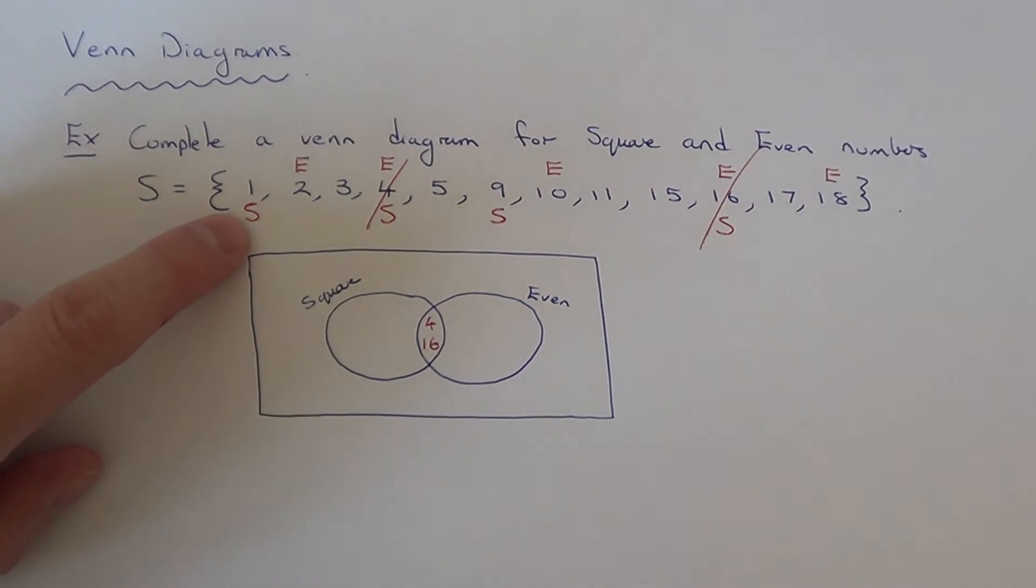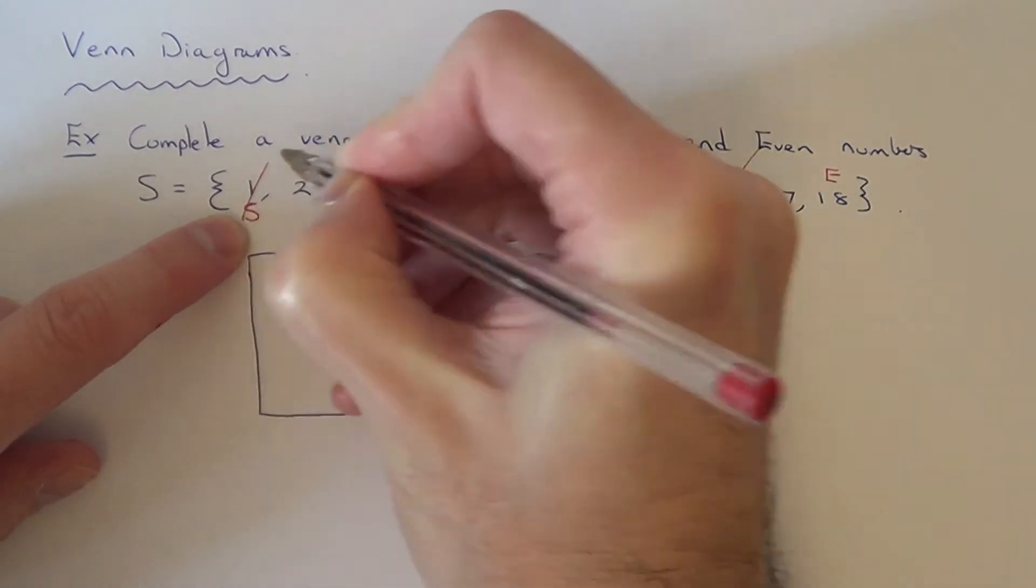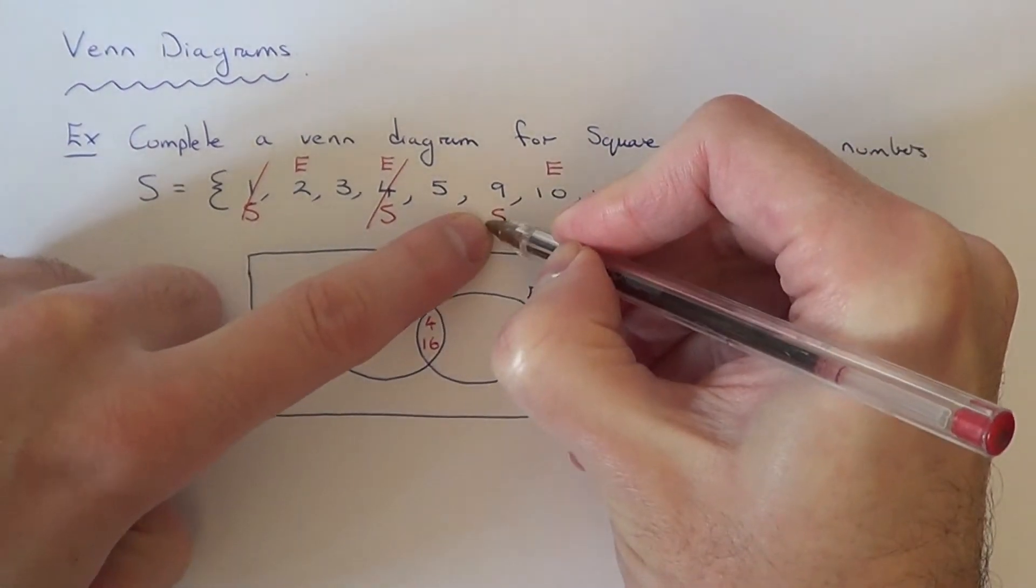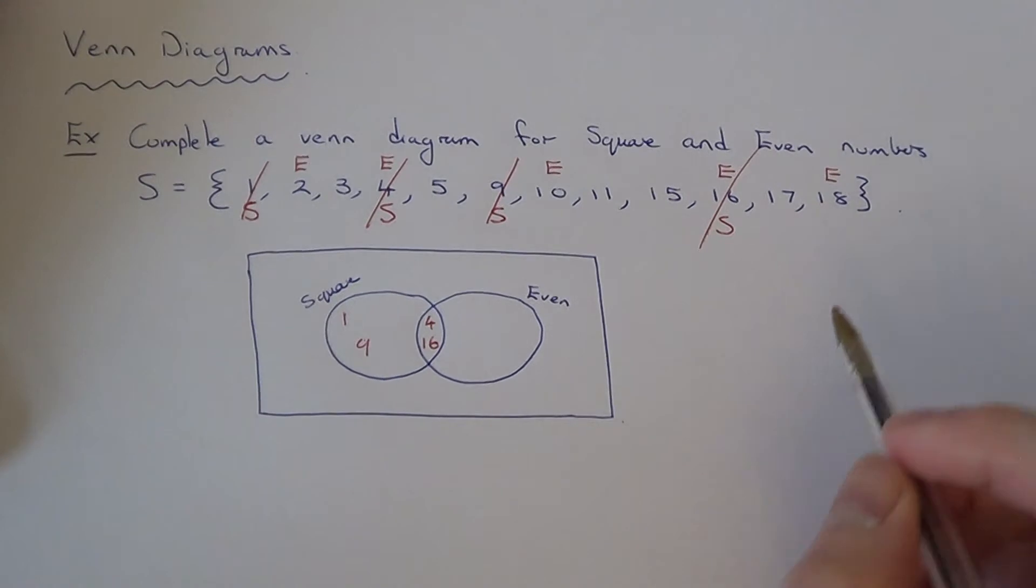So let me do the square numbers next. So the other square numbers we can put in this square circle here. So we've got 1, we've got 9 and I think that's it.